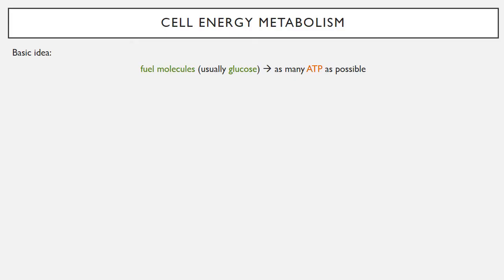The first thing we're going to talk about is cell energy metabolism. The basic problem in cell energy metabolism is how to turn the fuel molecules that a cell has to use into as many ATP as possible. Similarly, cells have to take their glucose, their fatty acids, any amino acids that they want to use for fuel, and they need to convert those into as many ATP as possible.